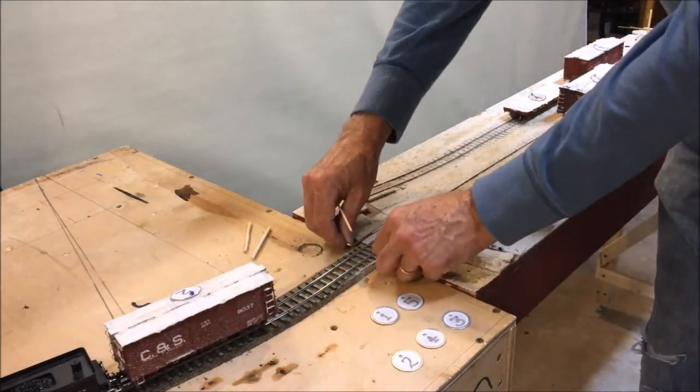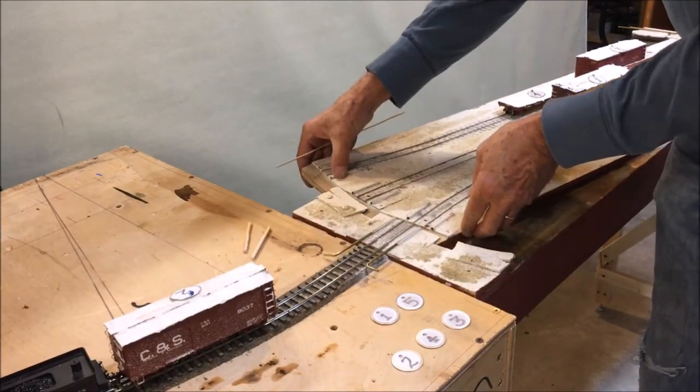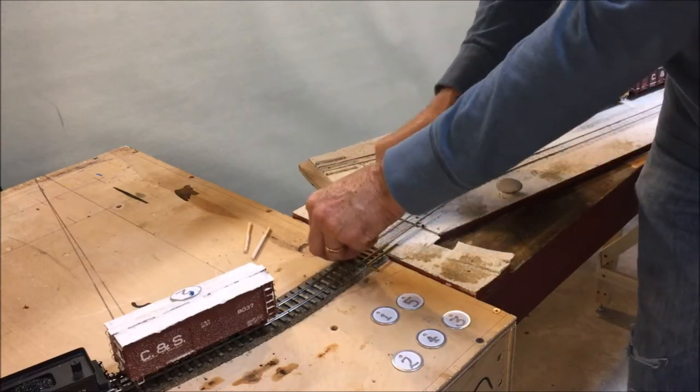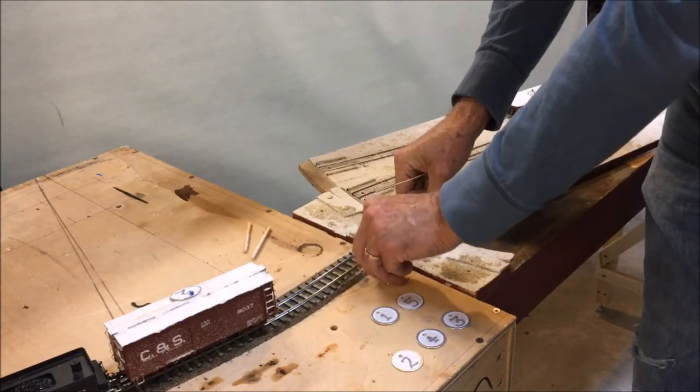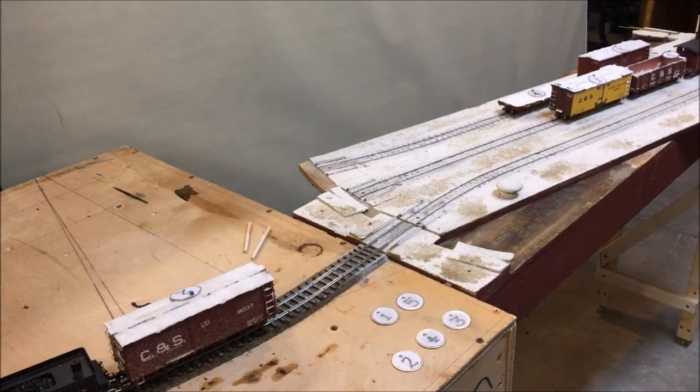So let's go ahead and put that back on a siding. And again the Inglenook puzzle says that the sidings only have a two car capacity in this condensed version. So I have to put it back out here on the near siding. Now let's go ahead and do that.